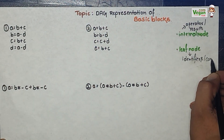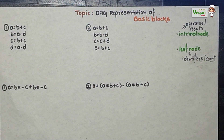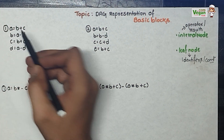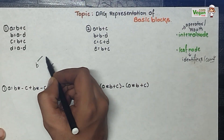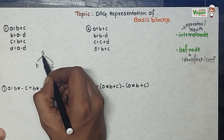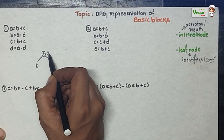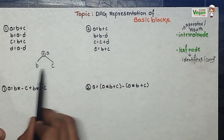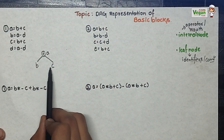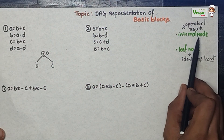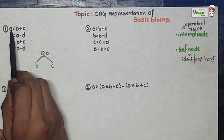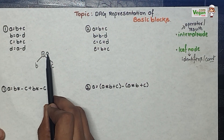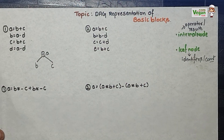Now let's solve the first problem. A is equal to B plus C, so B and C combine to form B plus C, which will be equal to A. Leaf nodes have identifiers or constants and internal nodes have the result, so B plus C result will be depicted using A. A is at the internal node along with the operator.